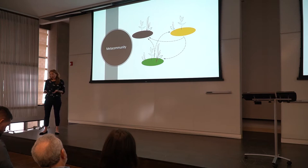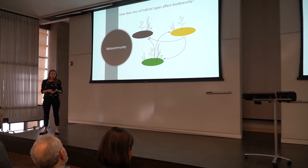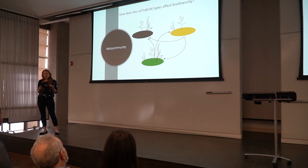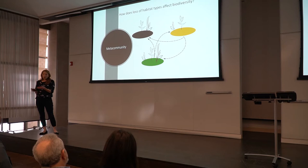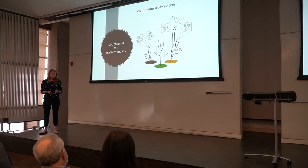Due to the ongoing pressures of land use change and habitat loss, we need to be able to answer the question of how loss of specific habitat types affects metacommunity diversity. However, this question is quite challenging to answer, because in the interest of preserving biodiversity, we don't necessarily want to go out and destroy forest fragments to test this experimentally — which is where a tiny model comes in.